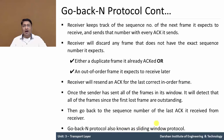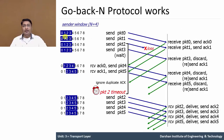Now let's look at how this protocol works with a figure. The window size for sending is 4, meaning a total of 4 packets will be sent. Here there are a total of 9 packets numbered 0 to 9, and packets 0, 1, 2, and 3 — a total of 4 packets — will be sent in the first window.